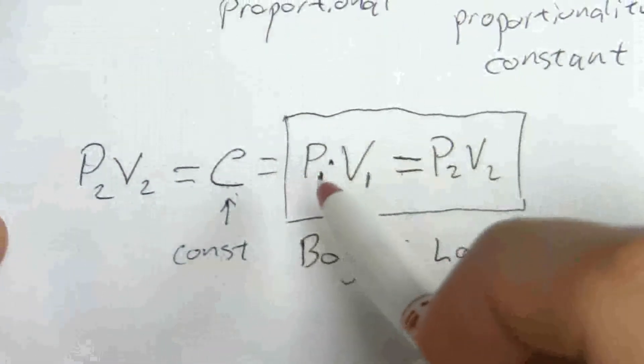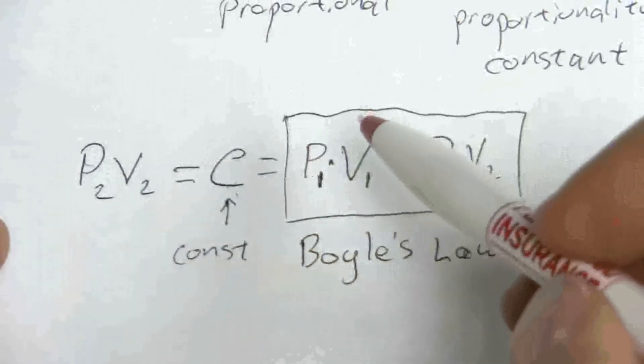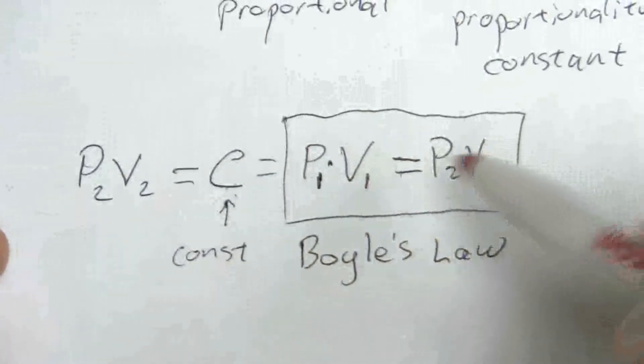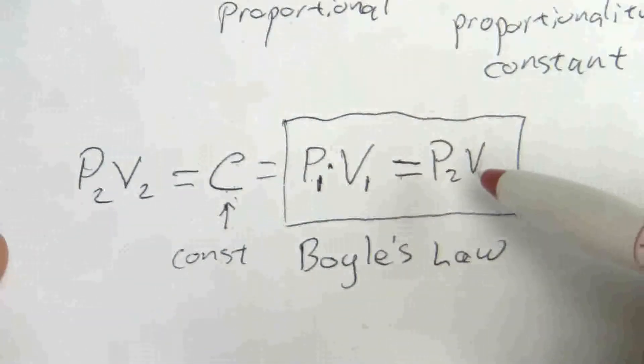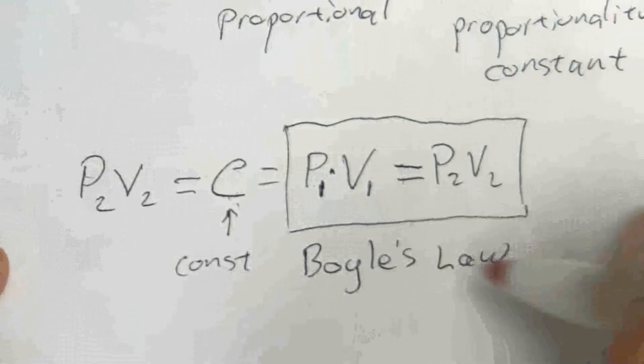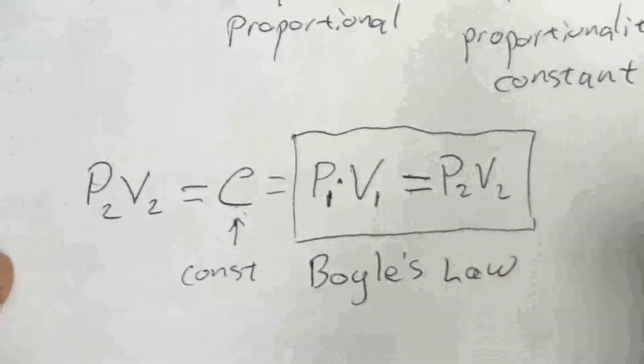So however the pressure changes, the volume compensates for that change such that my initial conditions and the final conditions, when I multiply them, it's the same value.